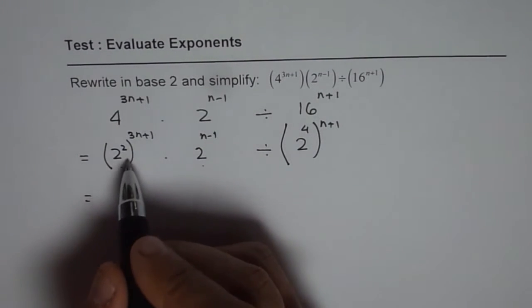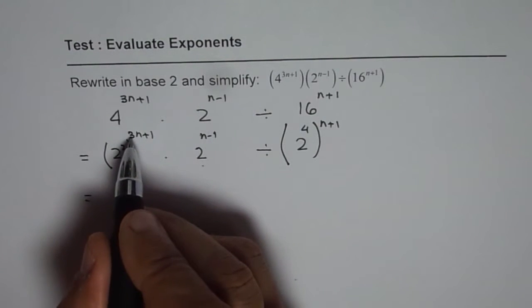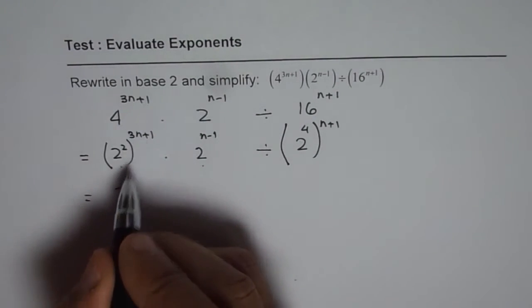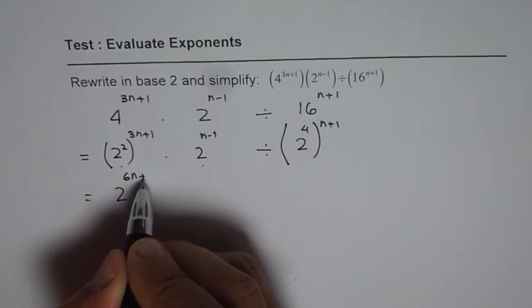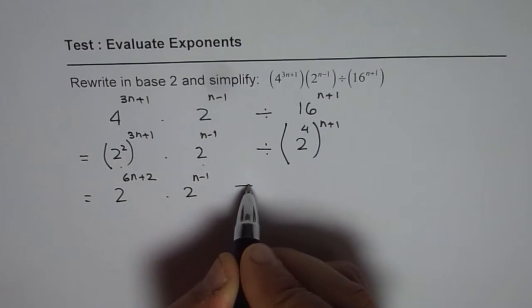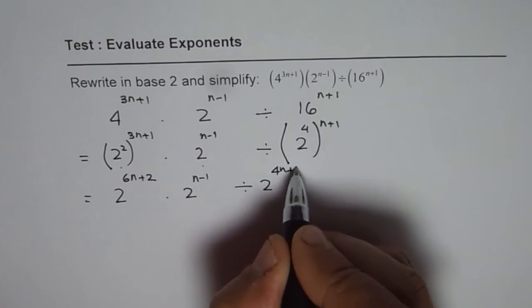So let's first use the power rule, which is 2 squared to the 3n plus 1. So 2 gets multiplied. We get 2 times 3n is 6n plus 2. In this case it is 2 to the power of n minus 1 divided by 2 to the power of 4n plus 4.